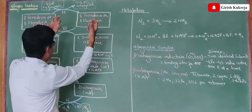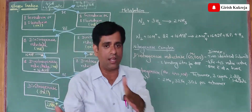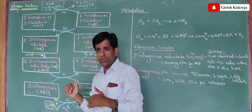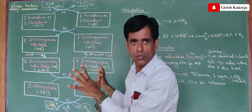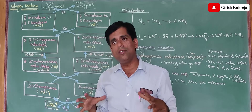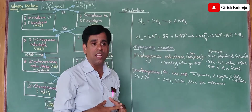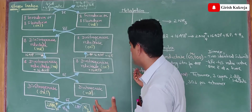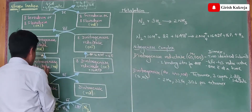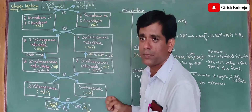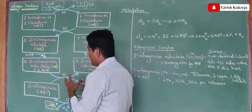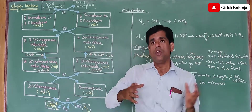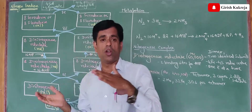This reduced ferredoxin or flavodoxin now acts as the electron donor for dinitrogenase reductase, one electron at a time. Once dinitrogenase reductase has taken the electron, this reduced form is going to bind ATP — so by transferring one electron, it is going to bind two ATP. Now ATP serves multiple purposes here: after binding and after hydrolysis, there is a conformational change in dinitrogenase reductase, shifting its E0' value from minus 300 millivolts to minus 420 millivolts.